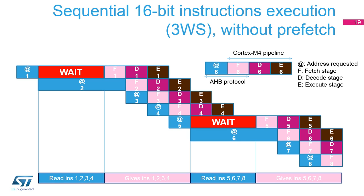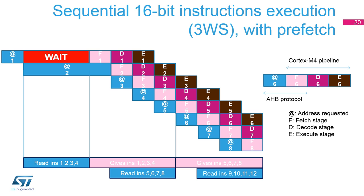This slide shows the number of cycles needed to execute sequential 16-bit instructions without prefetch when three wait states are needed to access the flash memory. This slide also shows the number of cycles needed with prefetch enabled under the same three wait states. After each flash access, another flash access is performed to fill the prefetch buffer, so after all instructions are fetched from the current buffer, the next sequential instruction is read from the prefetch buffer with no wait state inserted as long as the instruction flow is sequential.